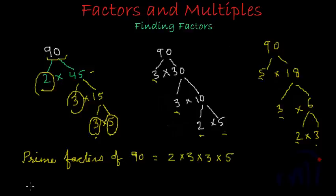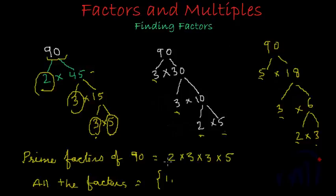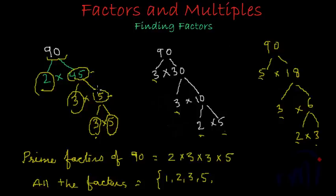If we talk about all the possible factors of 90, they start from 1, then we have the prime factors: 2, 3, and 5. I am writing 3 only once because 3 is a single factor of 90. All the numbers found at the intermediate nodes — 45, 15, 30, 10, 18, and 6 — are also factors of 90.